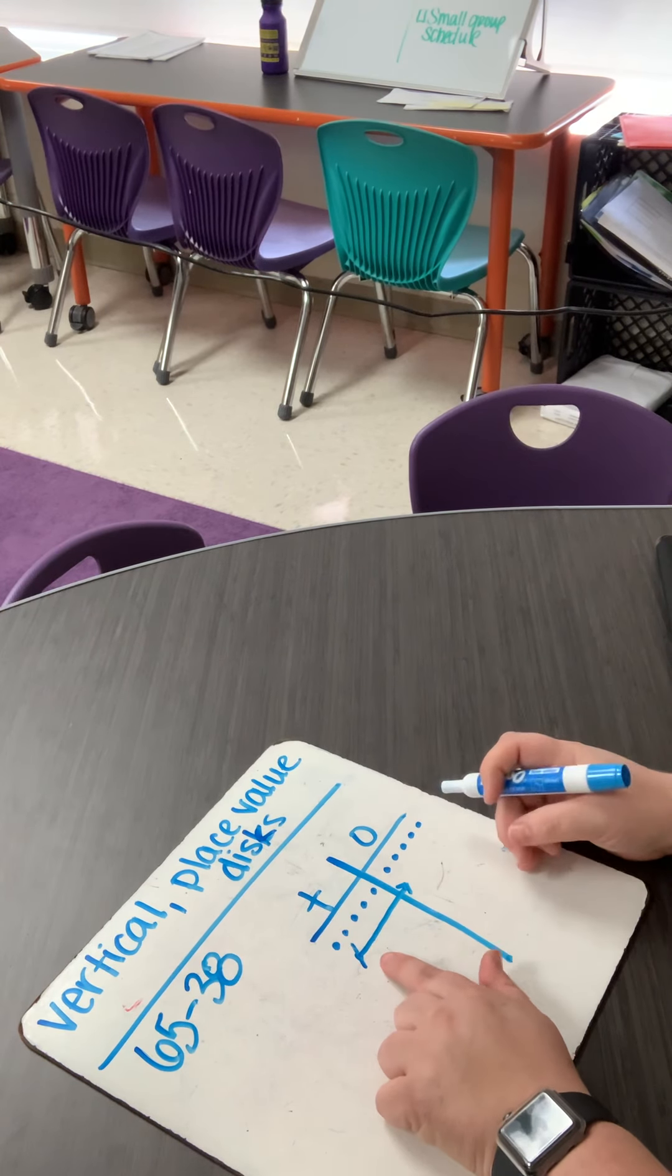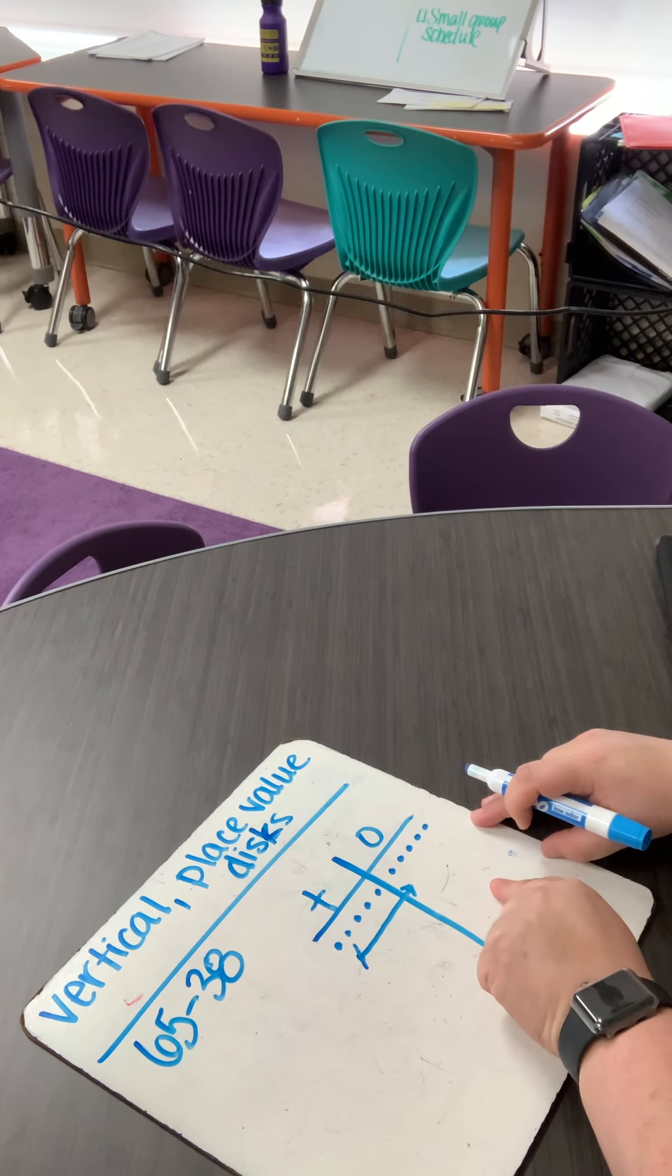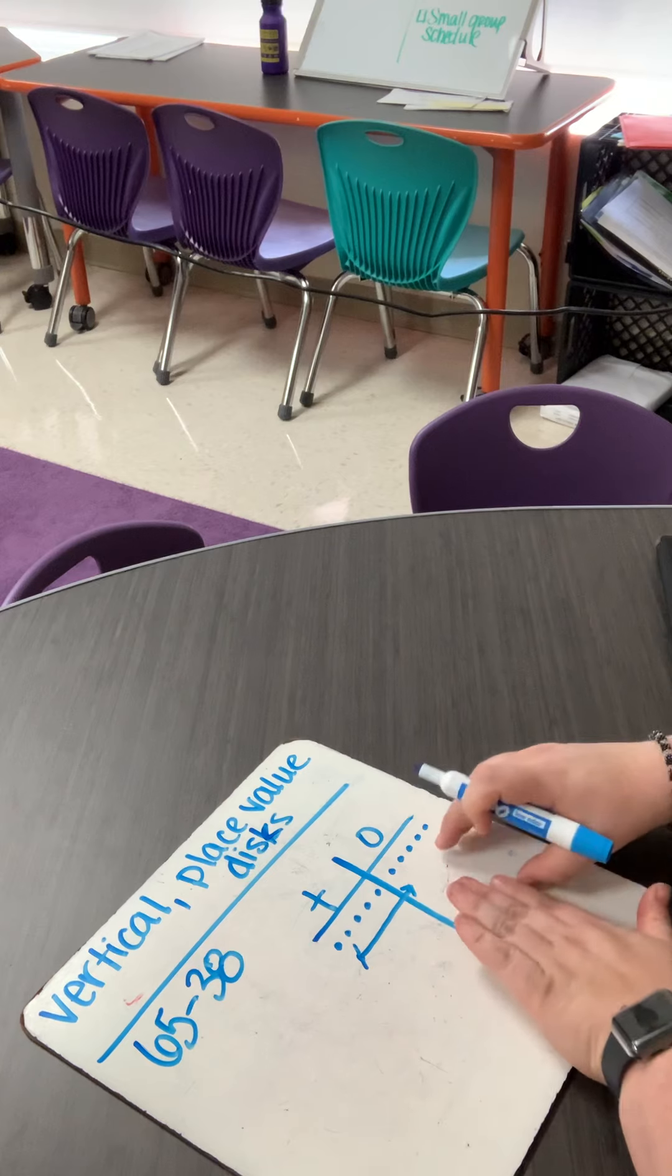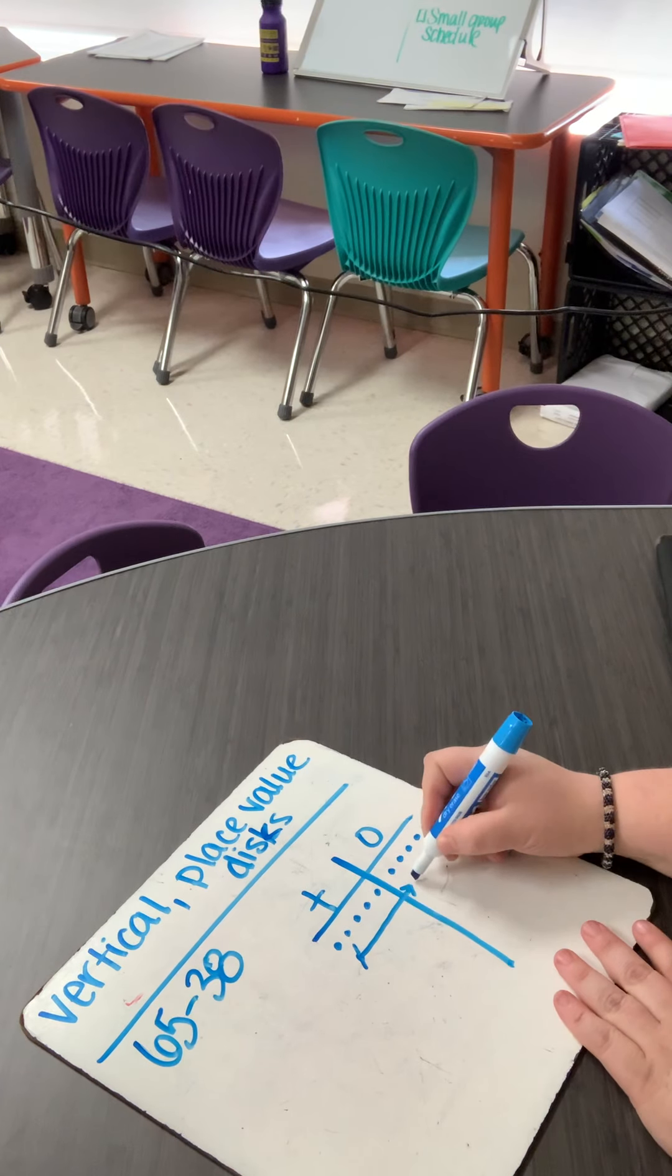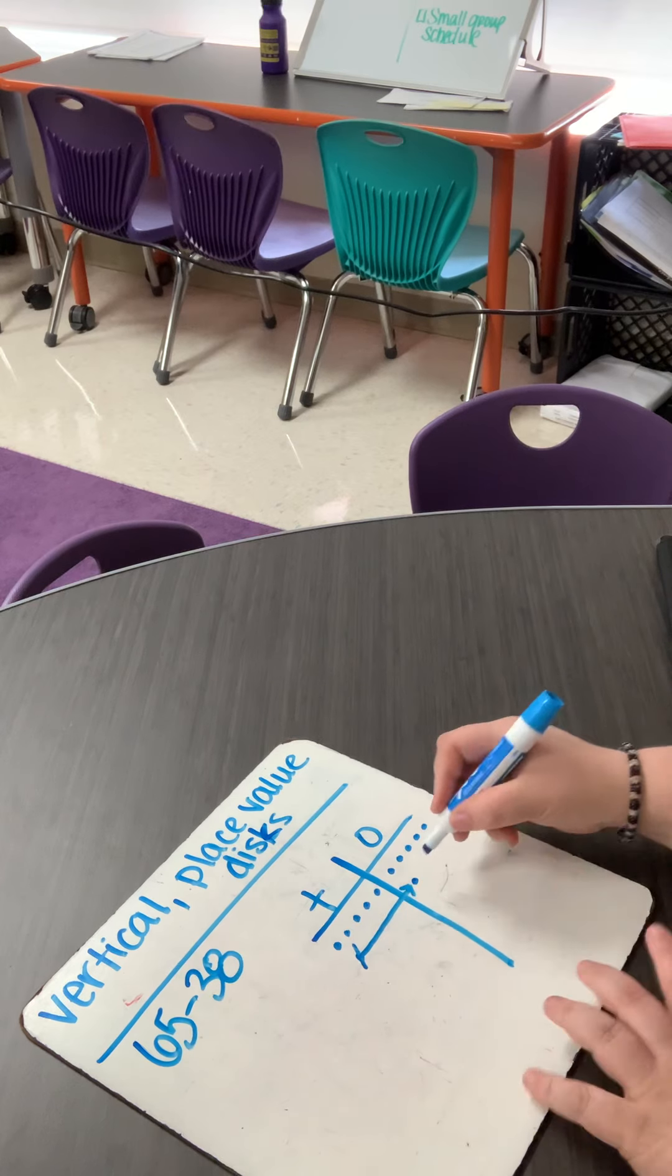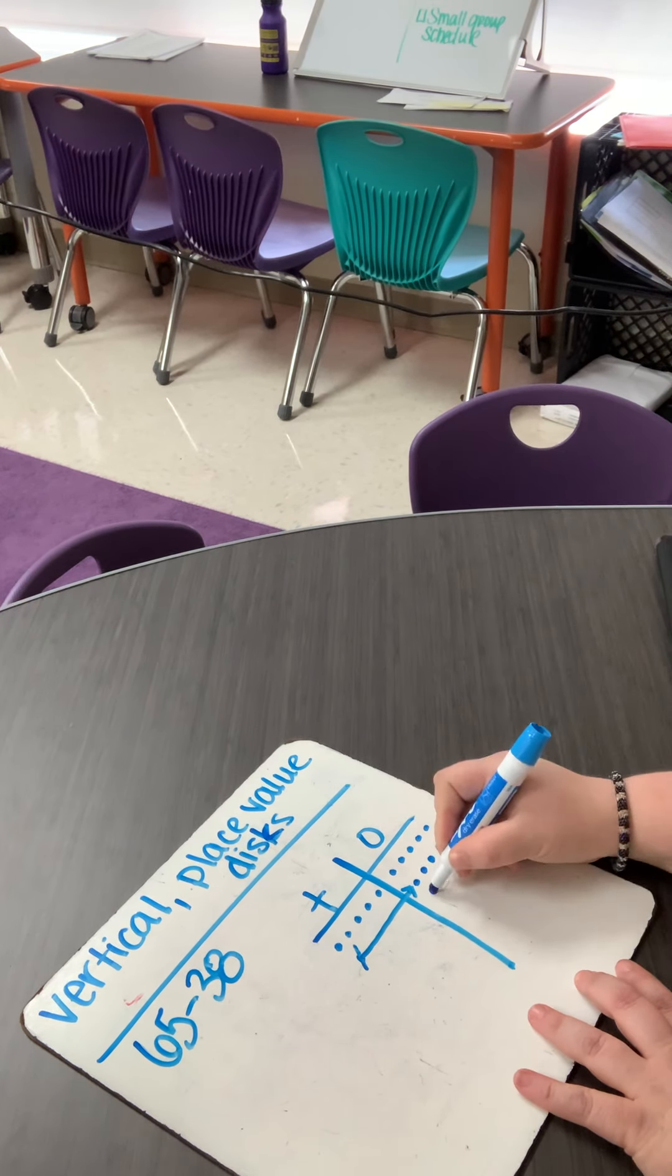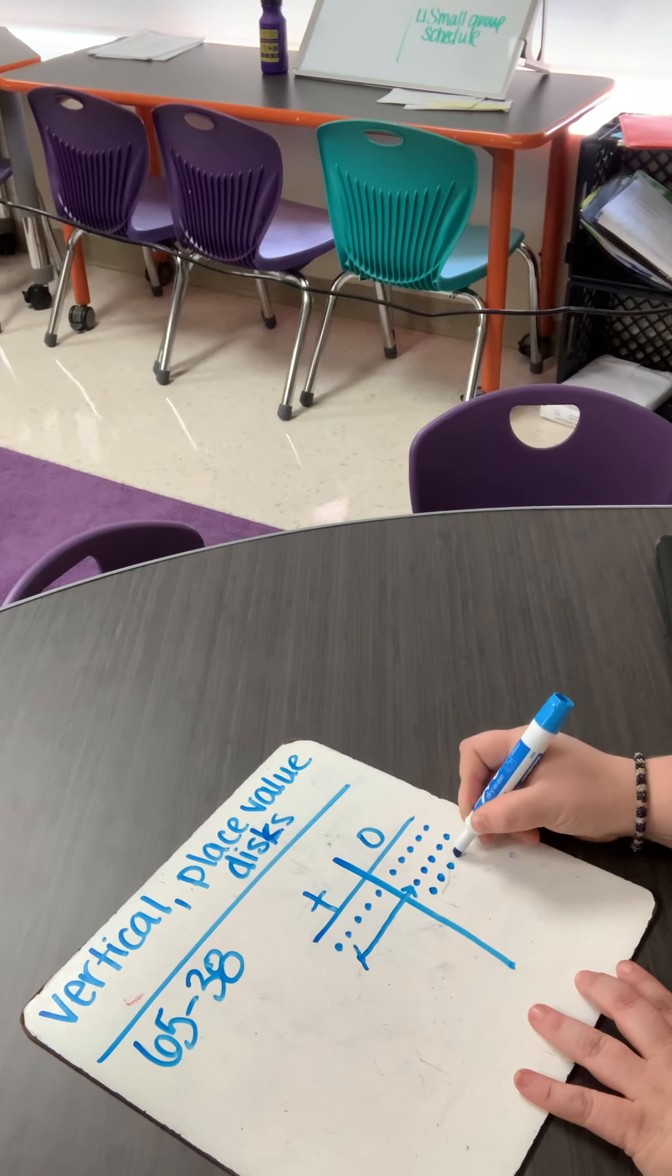Now, remember when I have a ten and I unbundle it over in the ones, that means that I add ten over here because I know that it takes ten ones to make one ten. So one, two, three, four, five, six, seven, eight, nine, ten.